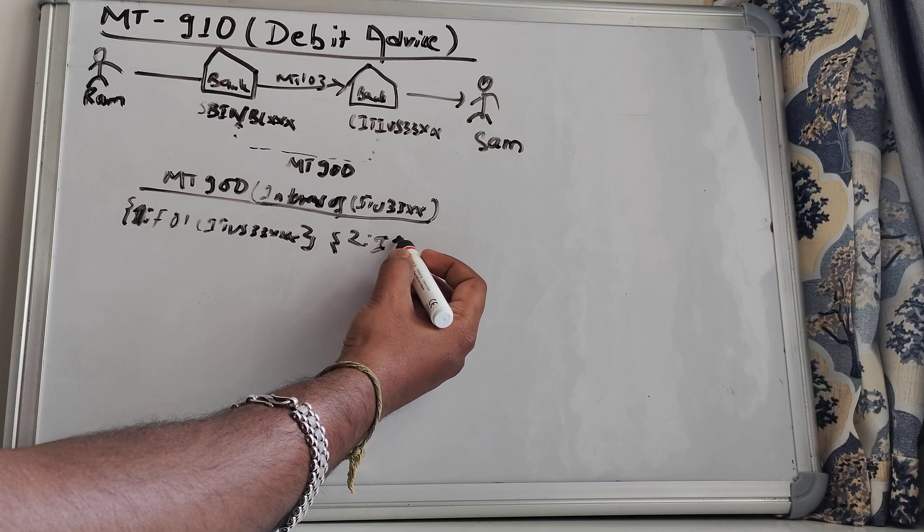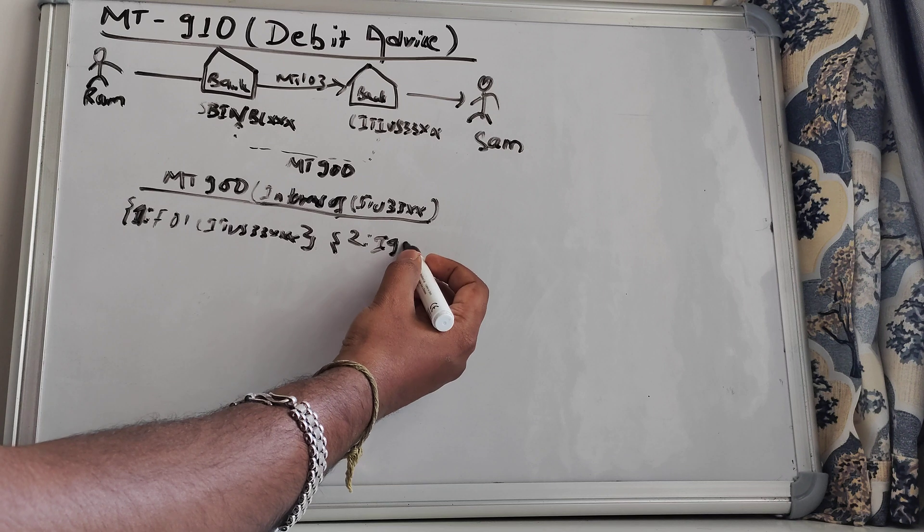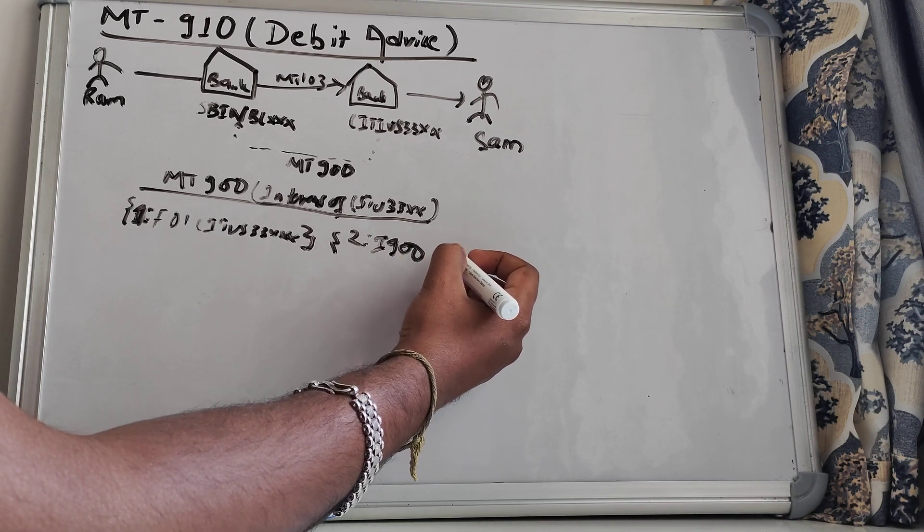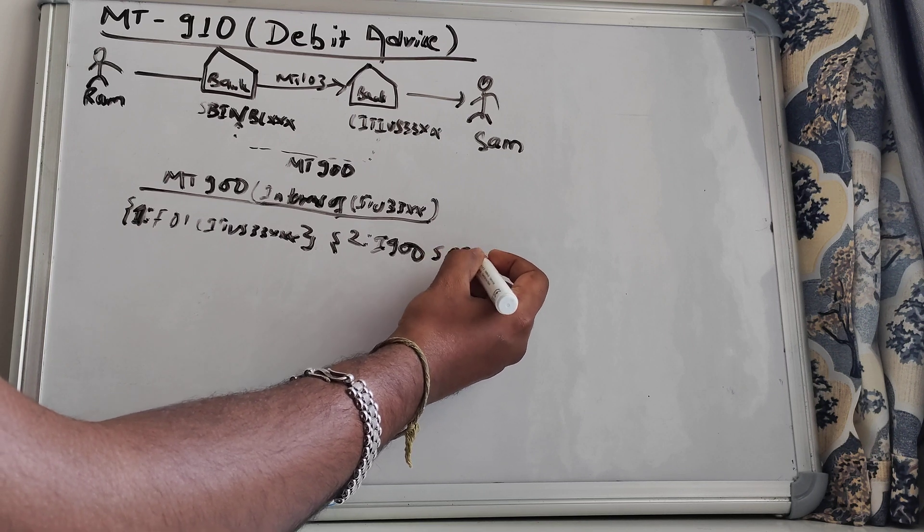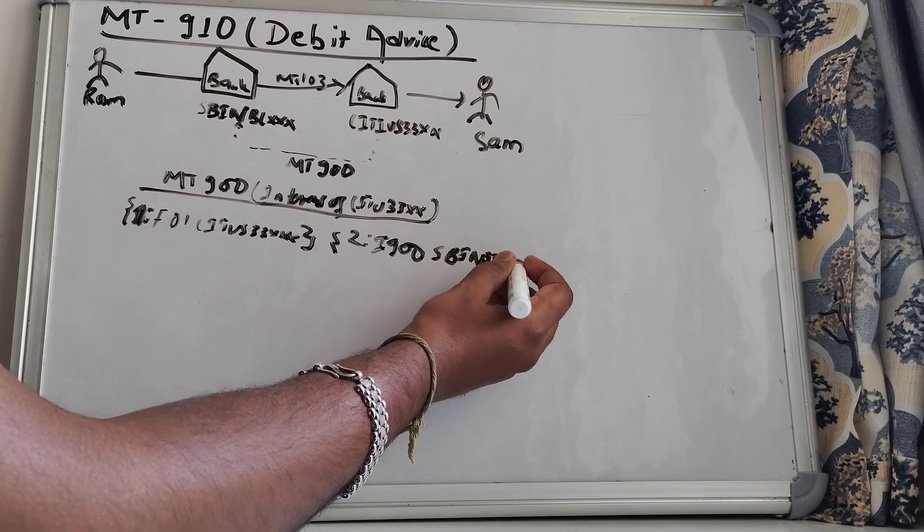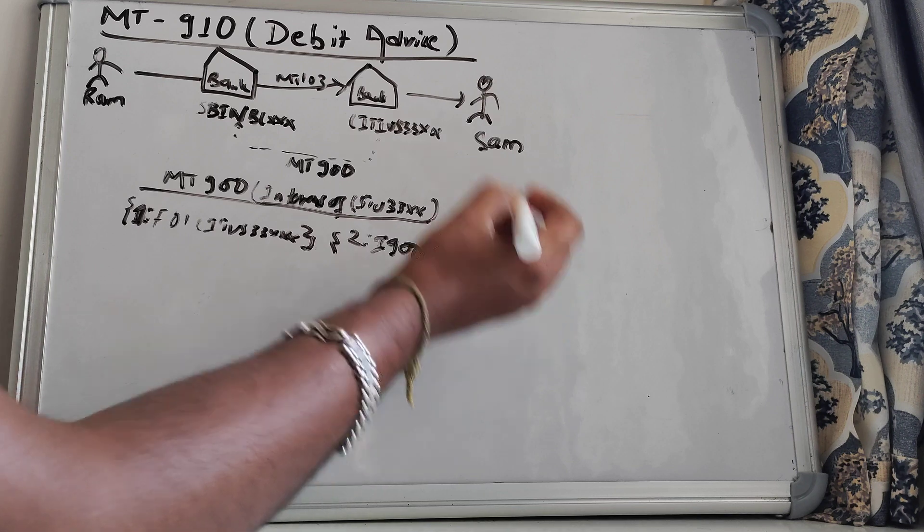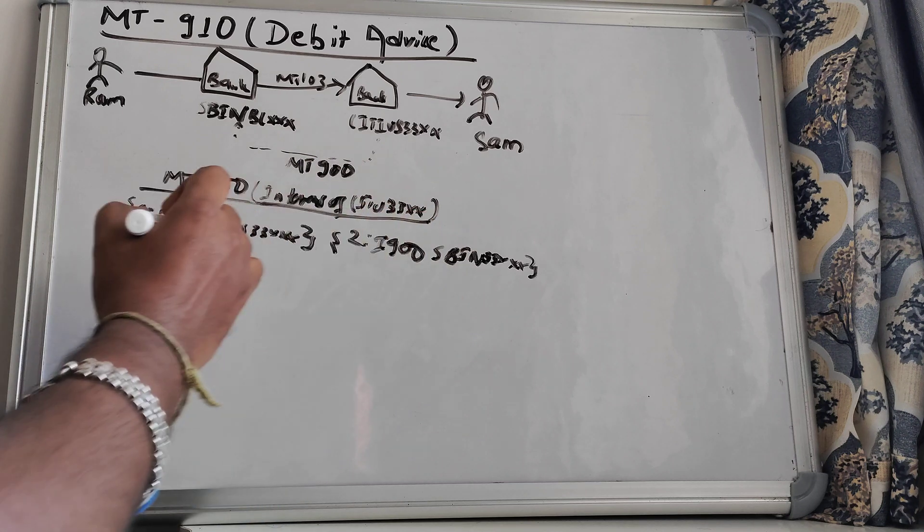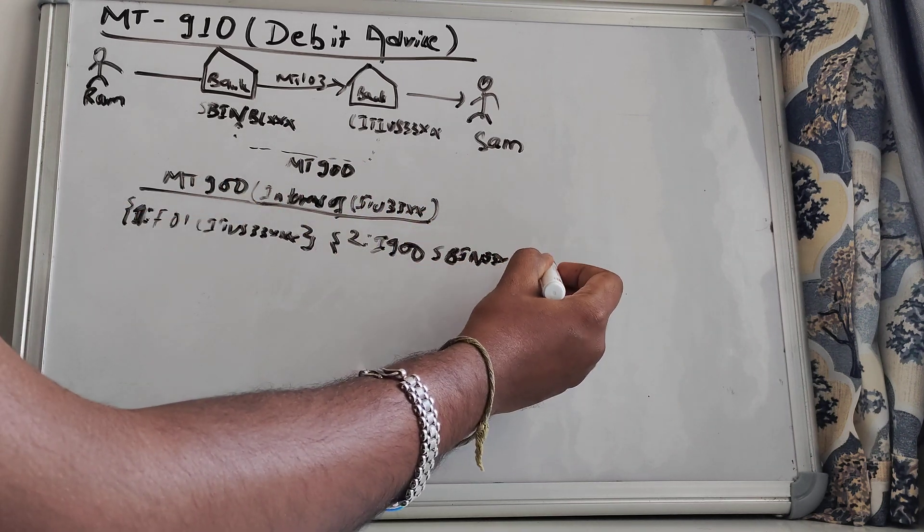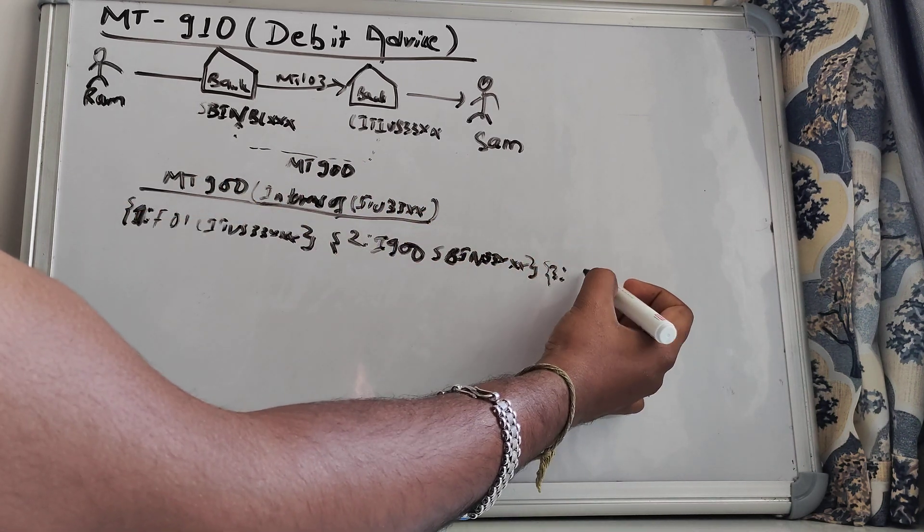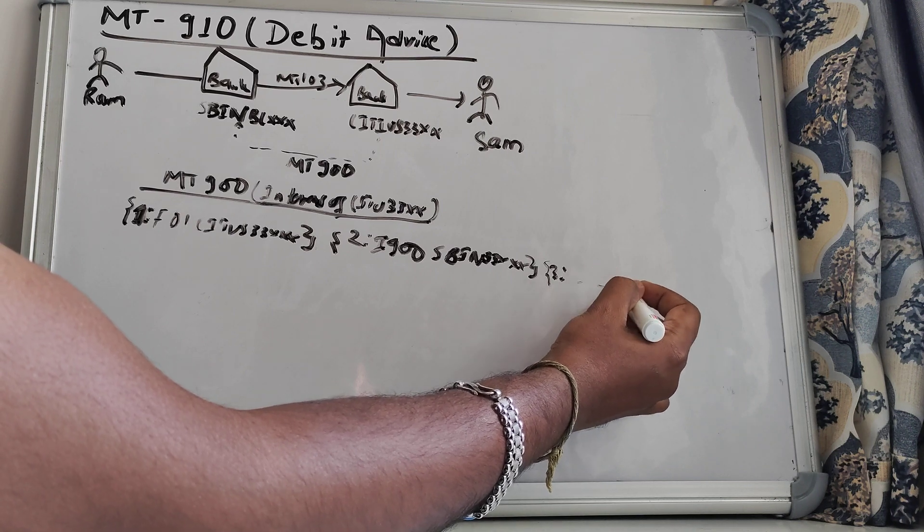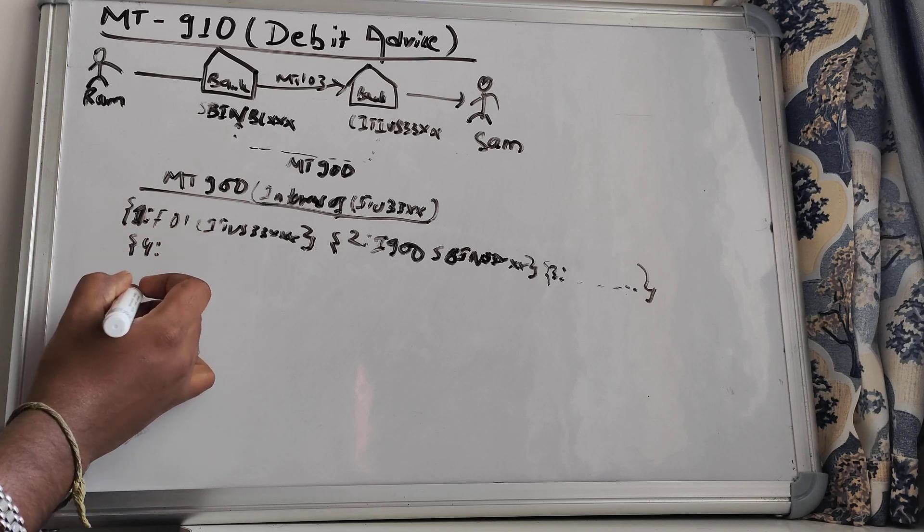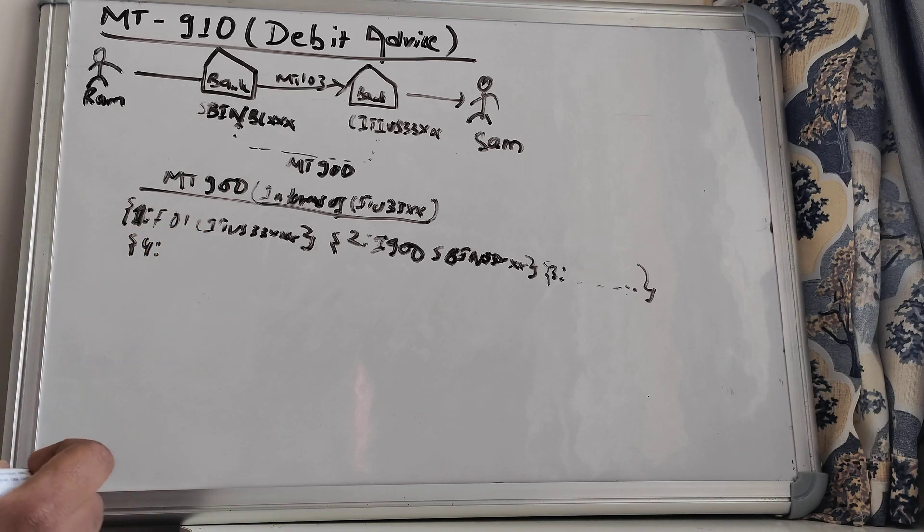This is an MT-900, so we will have 900 message type, and followed by the BIC receiver SWIFT, that is nothing but the SBIN 33XXX. This is block 2. And block 3, some data will be the priority code and all. And the block 4 starts from here.